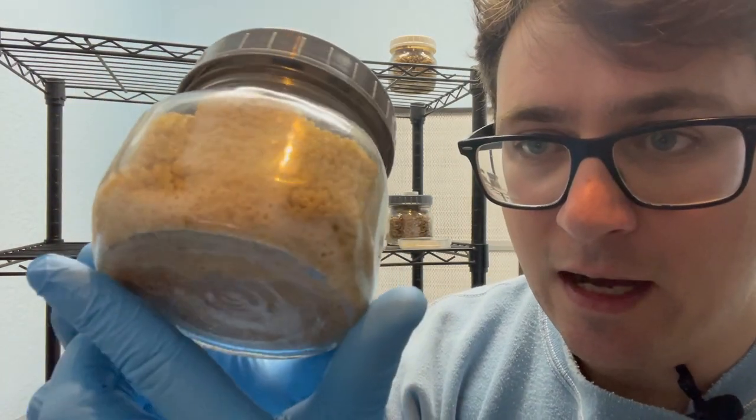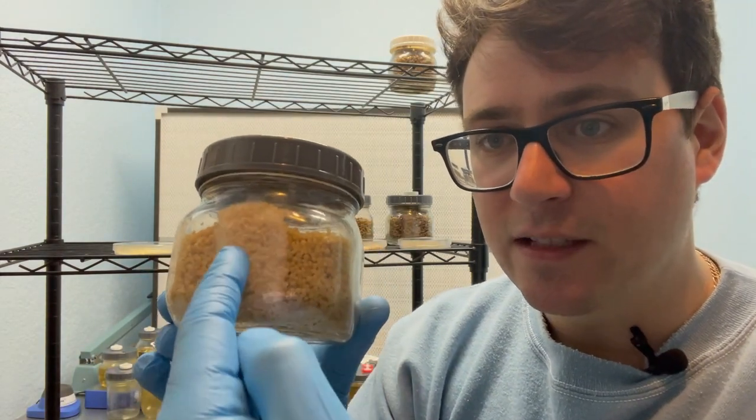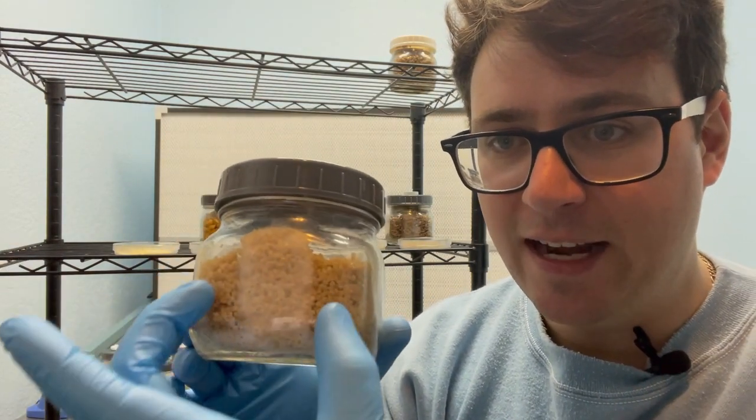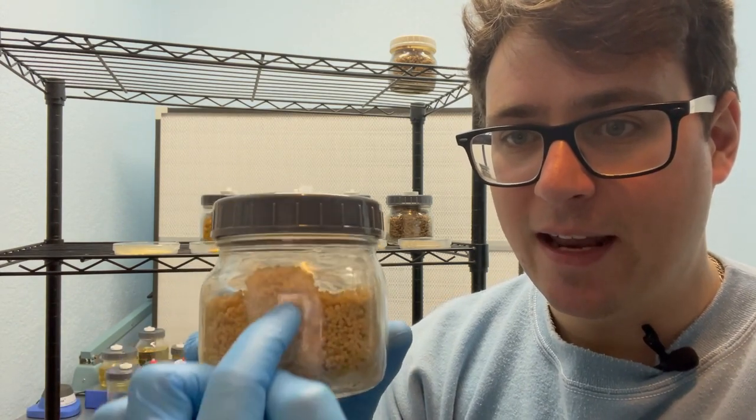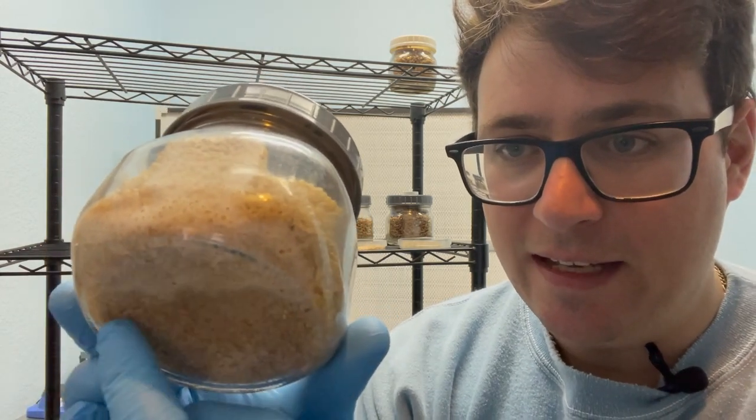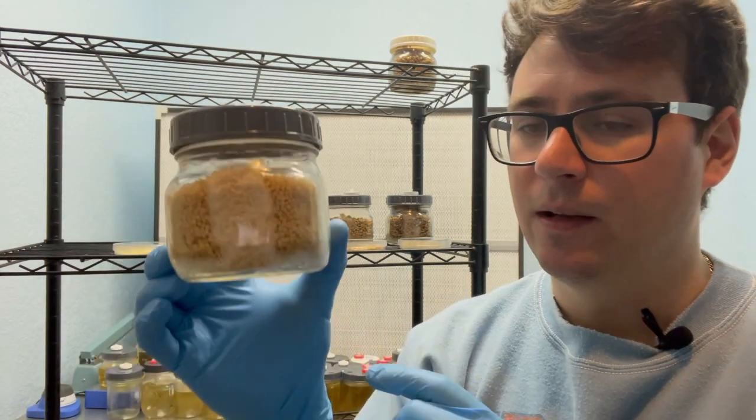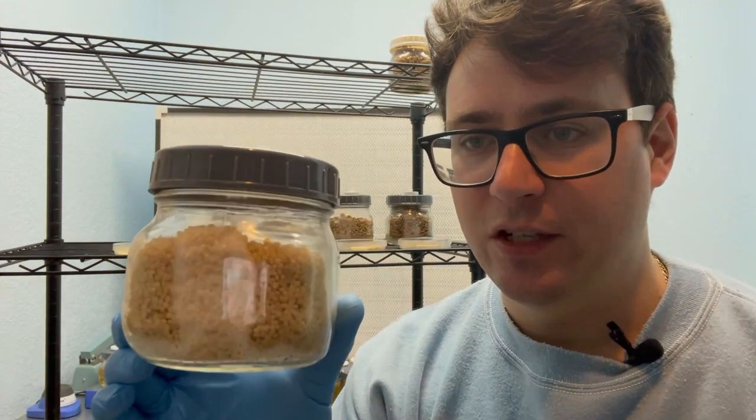This is the millet, very healthy growth so far. You can see that there's a clear defined area where the injection port is and where I inoculated that liquid culture and it's expanding down below probably the full region and length of the jar.